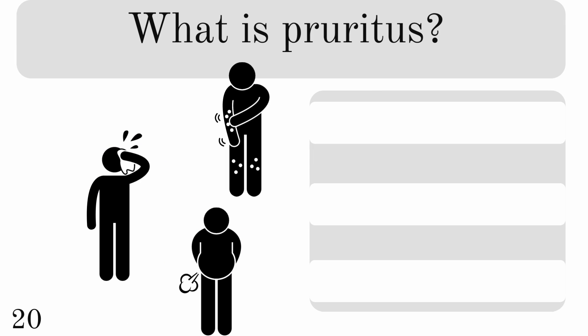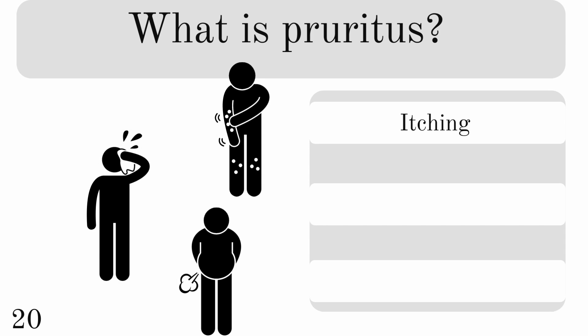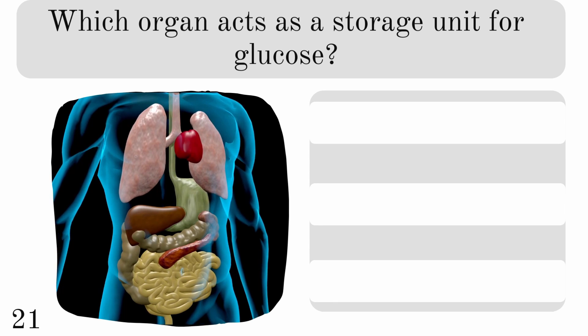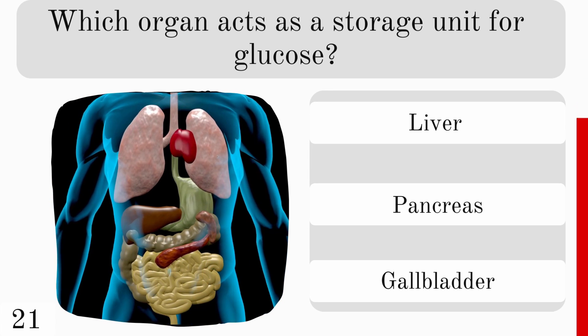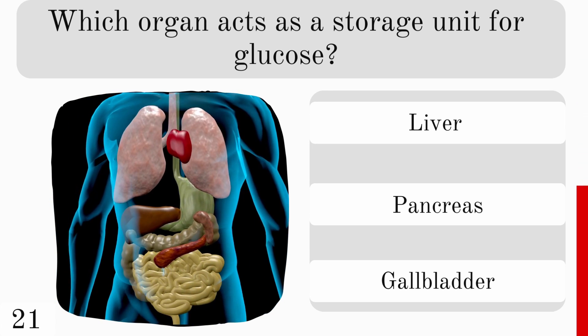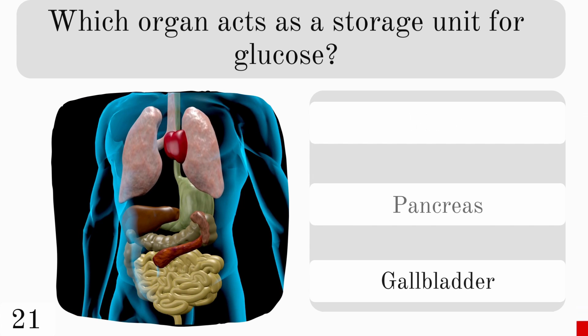What is pruritus? Is it itching, excessive sweating, or excess gas? And it is itching. Which organ acts as a storage unit for glucose? The liver, pancreas, or gallbladder? And it is the liver.